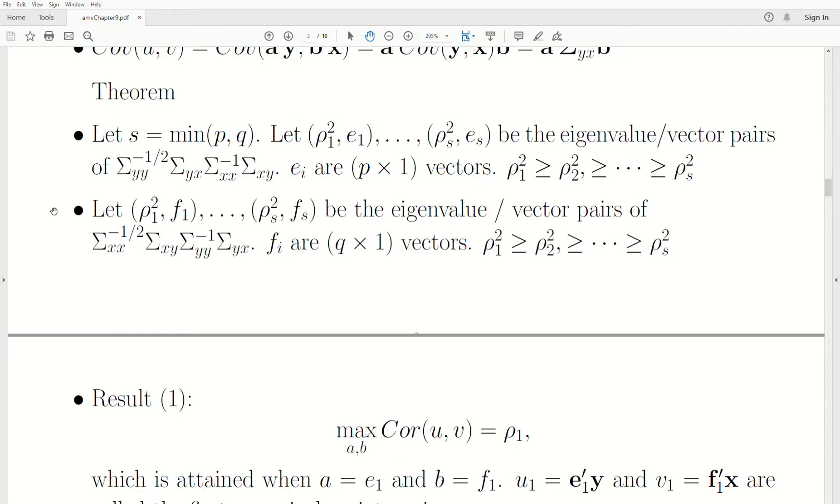Now, this, the second bullet, the eigenvalue vector pairs, rho 1 squared, f1, all the way to rho s squared, fs, are the eigenvalue vector pairs of this crazy matrix. And if you look at the dimensions of it, it is q by q, q by p, p by p, p by q. So it's a q by q matrix. And so the eigenvectors, fi, are q by 1 vectors. And, of course, the eigenvalues are sorted. And notice, they're the same eigenvalues, even though they're two different matrices.